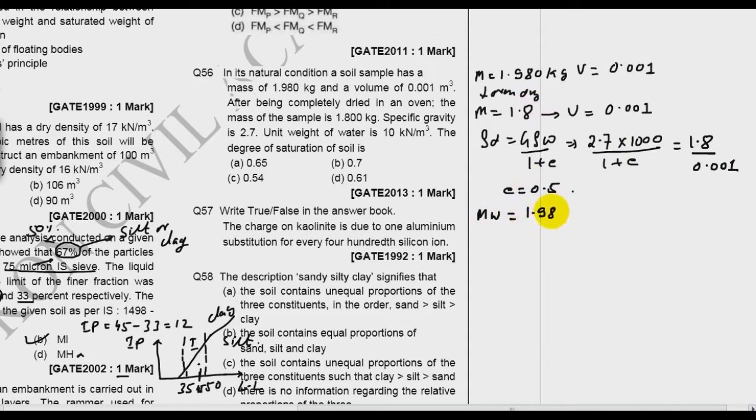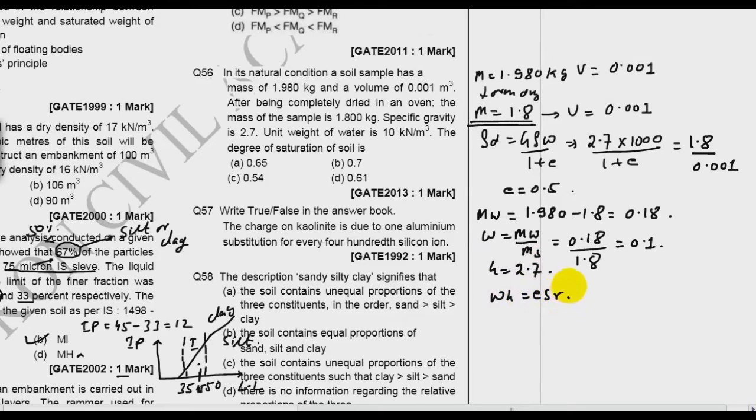Now what is the mass of water in this soil? It is 1.980 minus 1.8, so you get 0.18. Water content will be mass of water over mass of solid: 0.18 divided by 1.8, so w equals 0.1. Now we know w, we know e, and we know g is 2.7. Apply our golden equation: w·g = e·Sr. So w is 0.1, g is 2.7, e is 0.5, and Sr I need to find out. The answer is 0.54, so C is the answer.